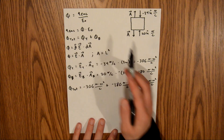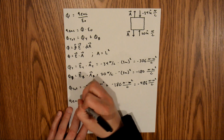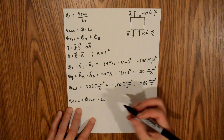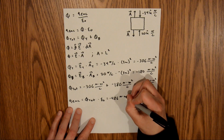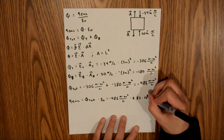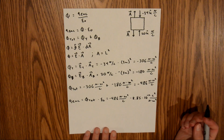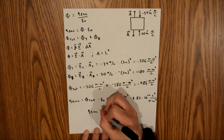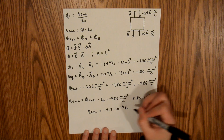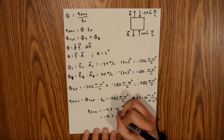Now we have our total flux to plug into our equation and find the net charge contained within the cube. Q enclosed is equal to flux total times epsilon naught, which is negative 486 newton·meters squared per coulomb times 8.85 × 10⁻¹² coulombs squared per newton·meters squared. Plugging that into the calculator, the charge enclosed equals negative 4.3 × 10⁻⁹ coulombs, or negative 4.3 nanocoulombs.